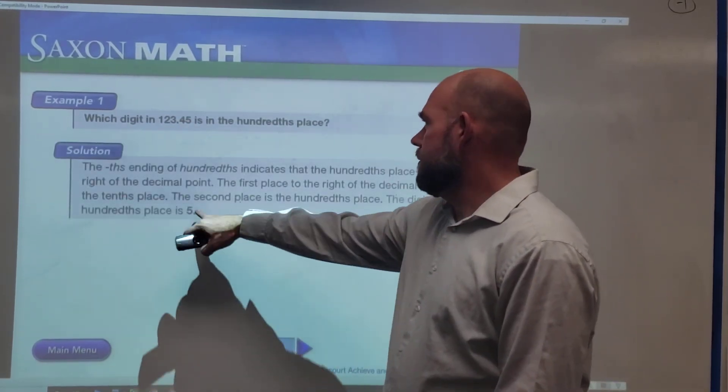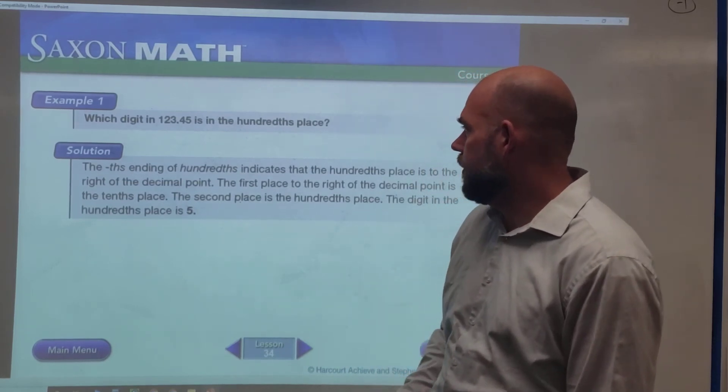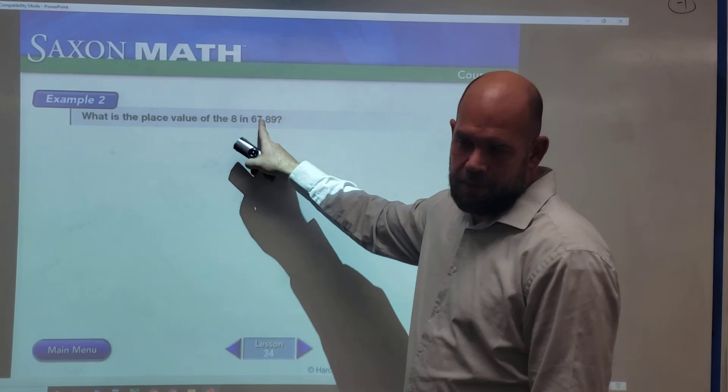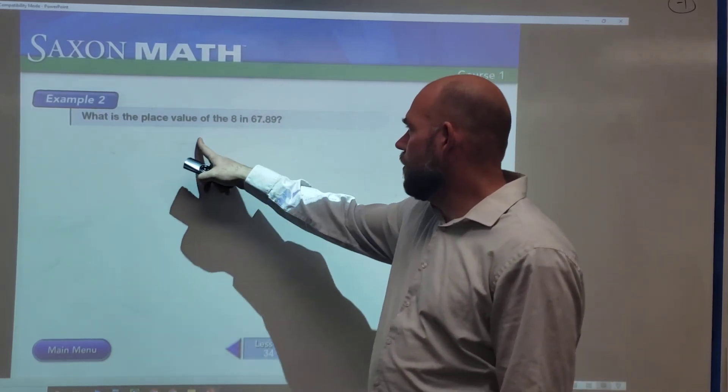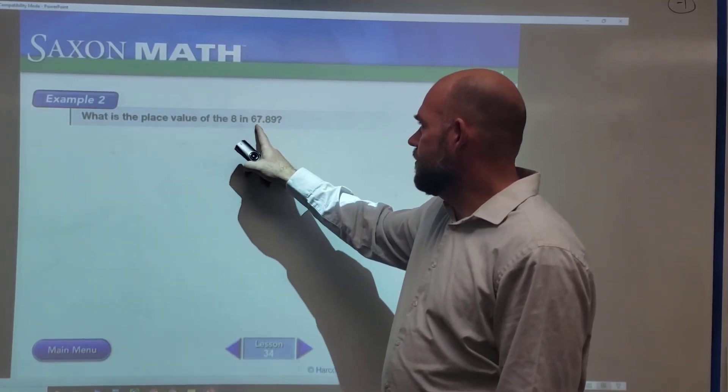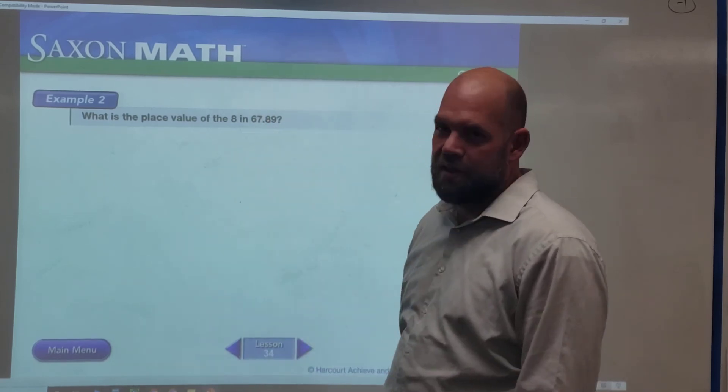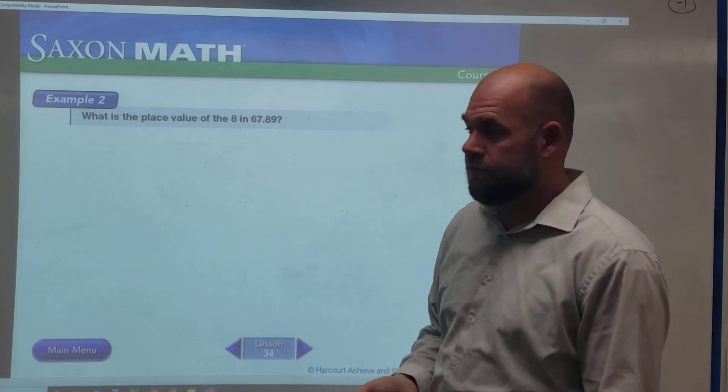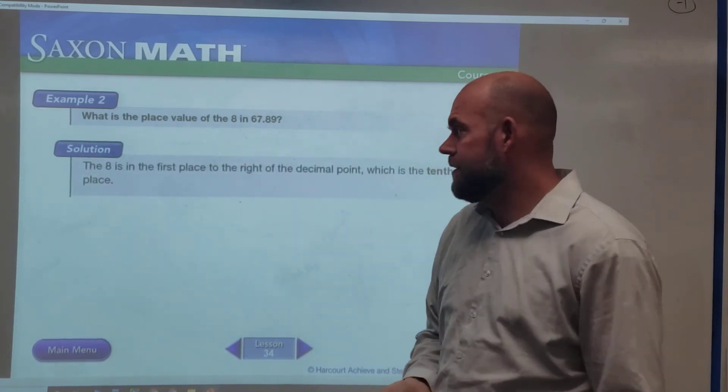This one's going to be five for the hundredths place. Which place value is eight here? That would be the tenths. I always think the ones because we start on ones going this way. 67: seven's in the ones column. But going right, it starts in the tenths because we're dividing by ten, so it makes sense.